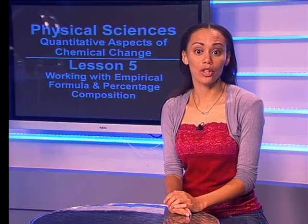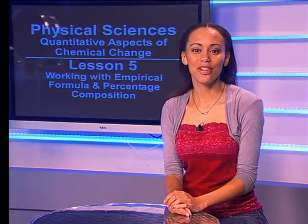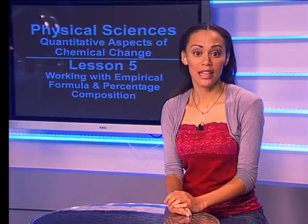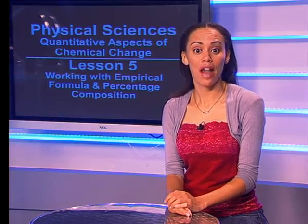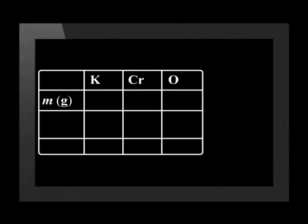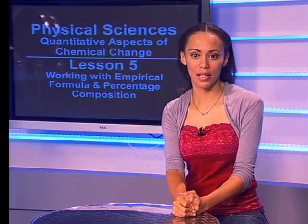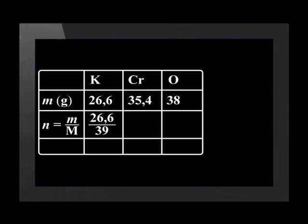So the molar mass that we will use is 16 grams per mole. Let's use the steps and a table to solve this question. Step one is to determine the moles of each element — we need to change the given masses to number of moles. The given masses were 26.6 grams of potassium, 35.4 grams of chromium, and 38 grams of oxygen. We divide by the respective molar mass: potassium is 26.6 divided by 39, chromium is 35.4 divided by 52, and oxygen is 38 divided by 16.